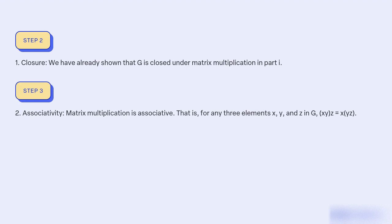Two, associativity. Matrix multiplication is associative. That is, for any three elements X, Y, and Z in G, (XY)Z = X(YZ).